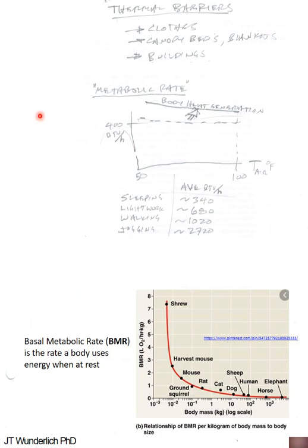More on basal metabolic rate. And here thermal barriers, of course, clothes, body, canopy beds, buildings, which is the primary focus we're talking about here. And then we have a kind of a baseline here of 400 BTUs per hour. And then that can be increased or decreased. Sleeping is decreased a little bit, but all activities would be increasing that: light walking, walking, jogging. And then you can see for different creatures here and where we are. Some creatures really are very high.